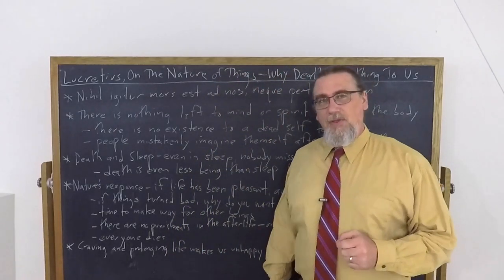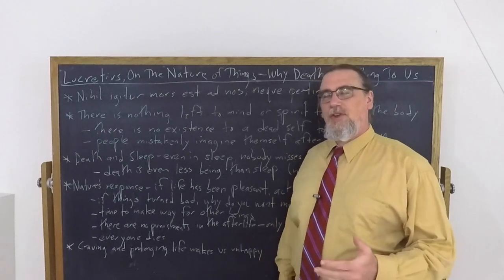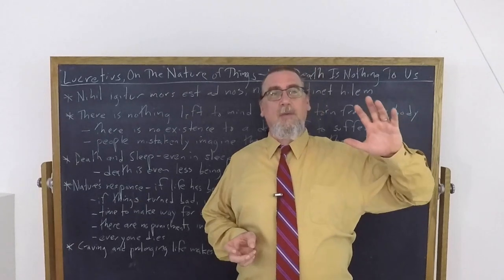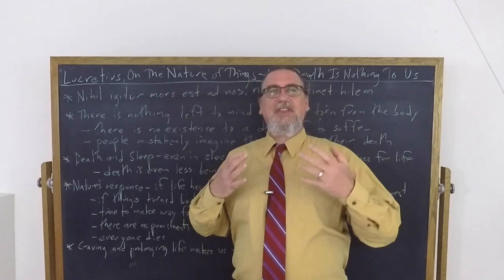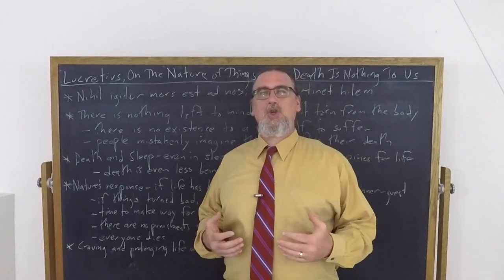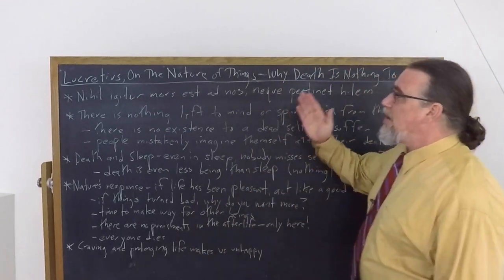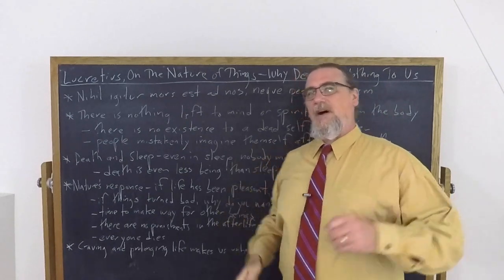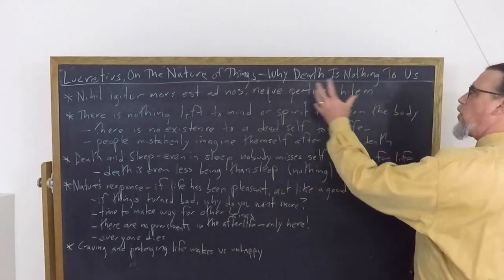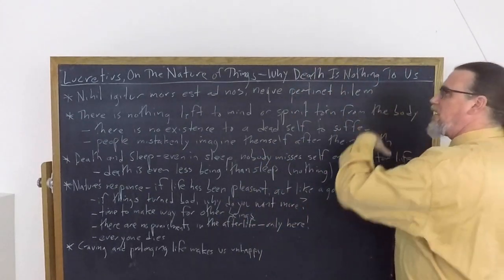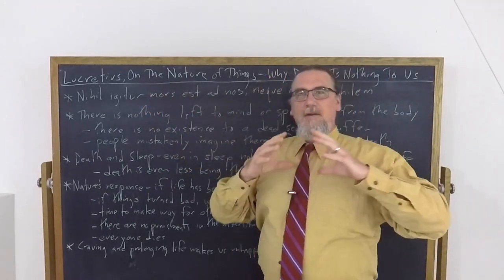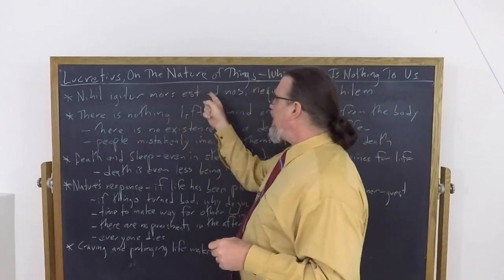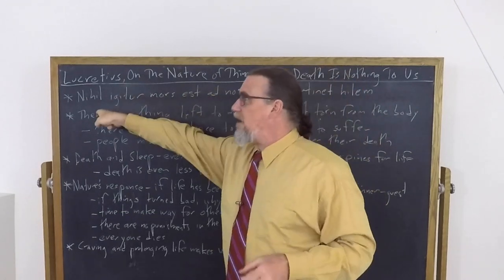In his poem On the Nature of Things, Lucretius is going to repeat a maxim coming down all the way from Epicurus: Death is nothing to us. In Latin, nihil igitur mors est ad nos. And he follows that up as well by saying neque pertinet hilum. So, literally from these things therefore death is for us nothing, nihil.